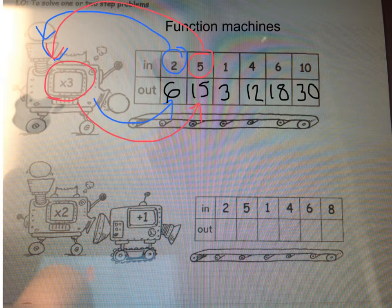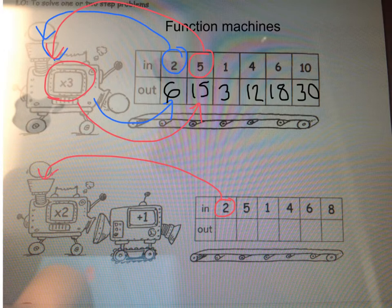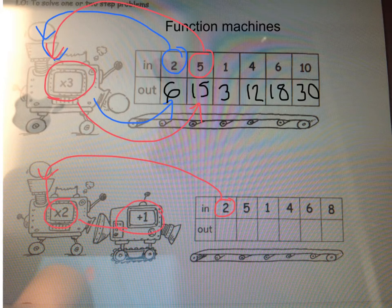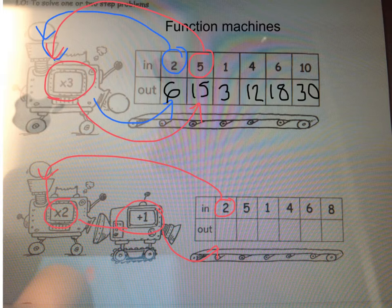Now, we've looked at that very simple function machine. We'll look at one which is slightly more challenging. So, we start with 2. 2 goes in and gets multiplied by 2, which makes it 4. 4 then gets added to 1. 4 plus 1 is 5. So, the output will be 5.